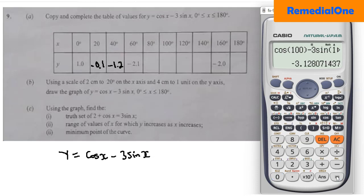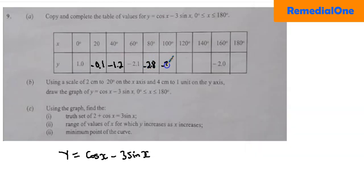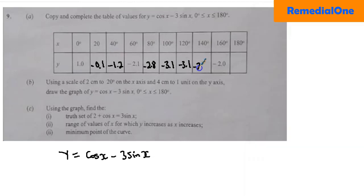Change to x = 100 and that gives negative 3.1. Change to x = 120 — the calculator gives a value that rounds to negative 3.1 as well. So we record: x = 80 gives negative 2.8, x = 100 gives negative 3.1, x = 120 gives negative 3.1. For x = 140, the result is negative 2.7. For x = 180, the result is negative 1.0.